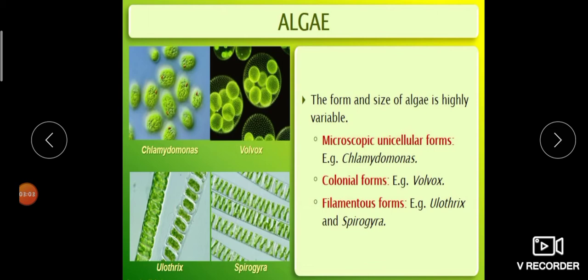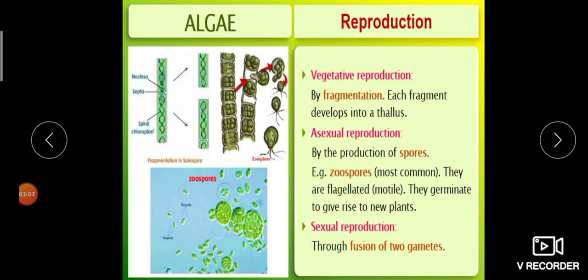The reproduction of algae is of three types: vegetative reproduction, asexual reproduction, and sexual reproduction. Vegetative reproduction is by fragmentation. A structure called septae forms in the body of Spirogyra, separating the plant body into two. Each fragment develops into an individual thallus.